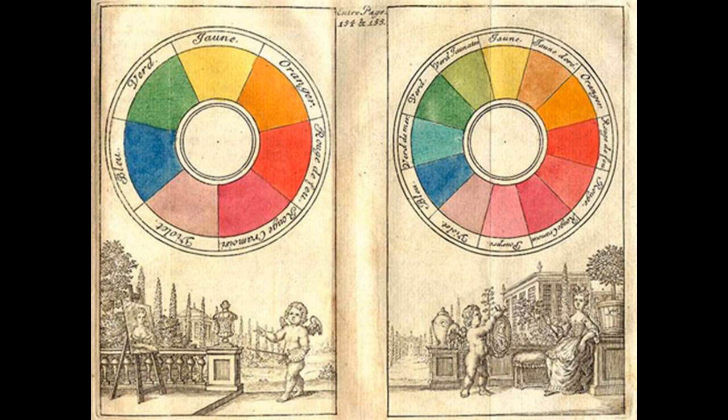The modern color wheel dates from the time of Sir Isaac Newton. He developed a concept of displaying the color spectrum in the shape of a wheel. These two wheels divide the spectrum into seven and twelve hues, respectively.